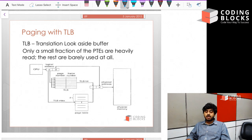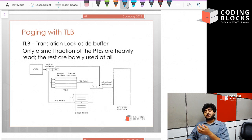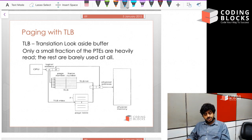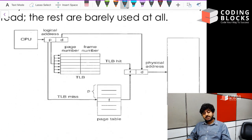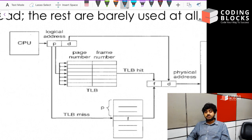One optimization is using a Translation Lookaside Buffer, called a TLB. Most processes are designed such that some variables are used more frequently, which means some pages are read from more frequently than others. The operating system creates a TLB that keeps a cache of page numbers and frame numbers. The TLB is usually stored in cache memory, so it can be looked up really fast — much less time than looking up the full page table.